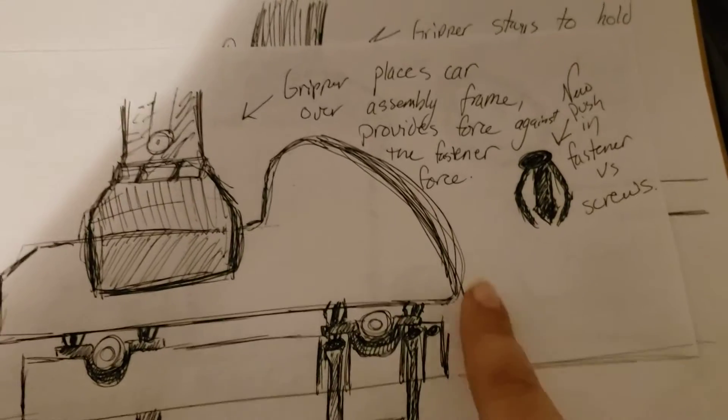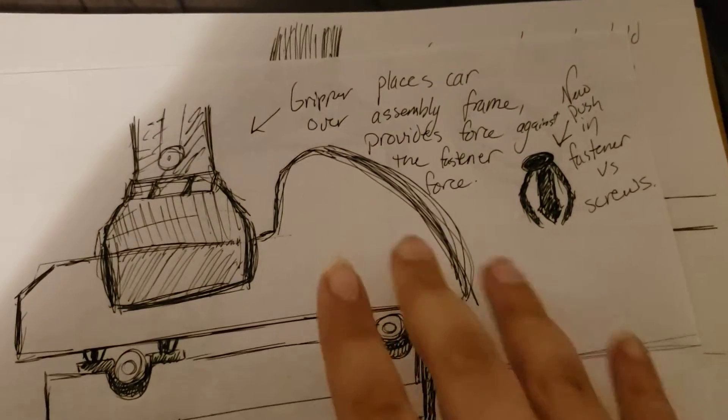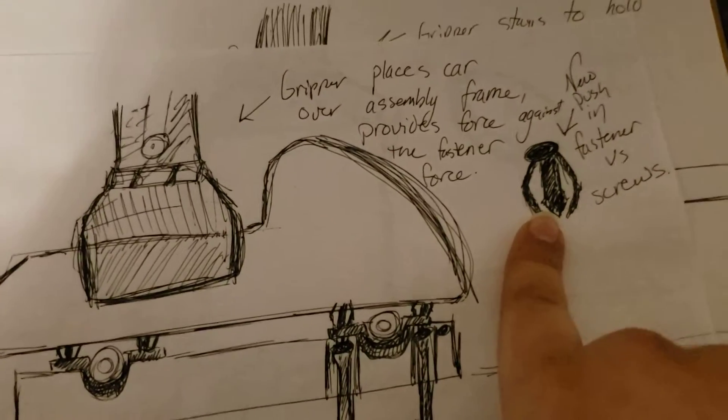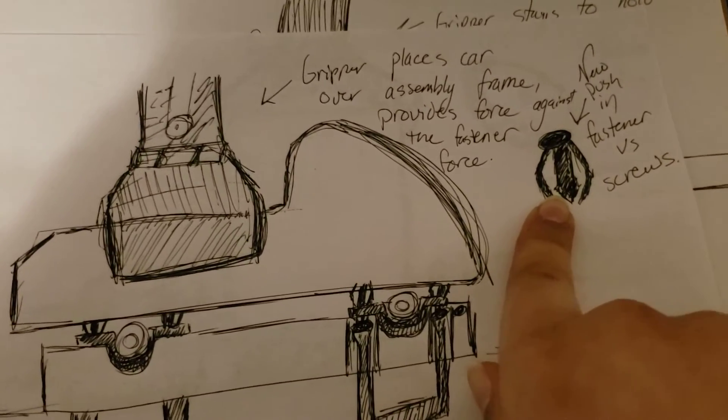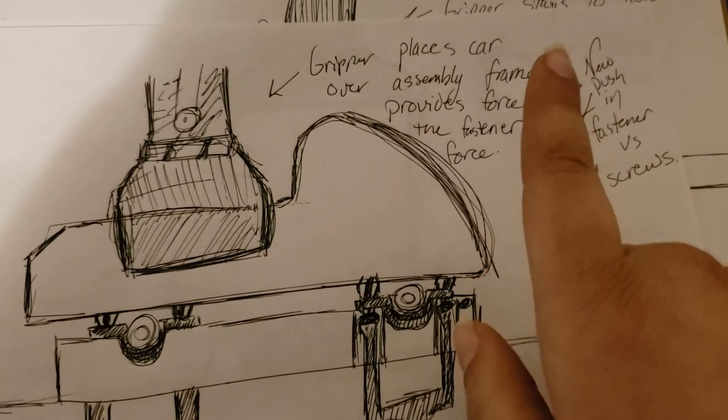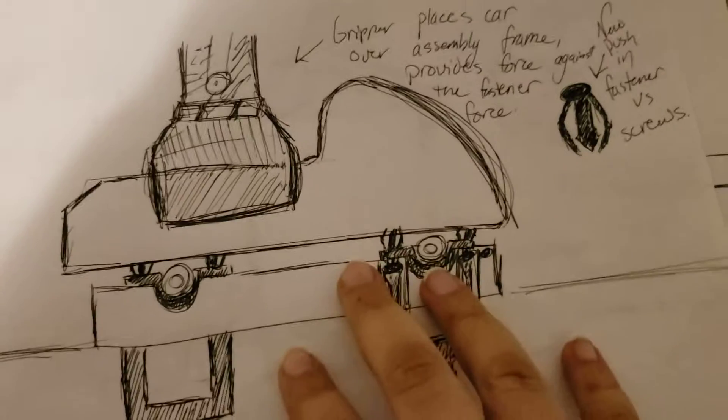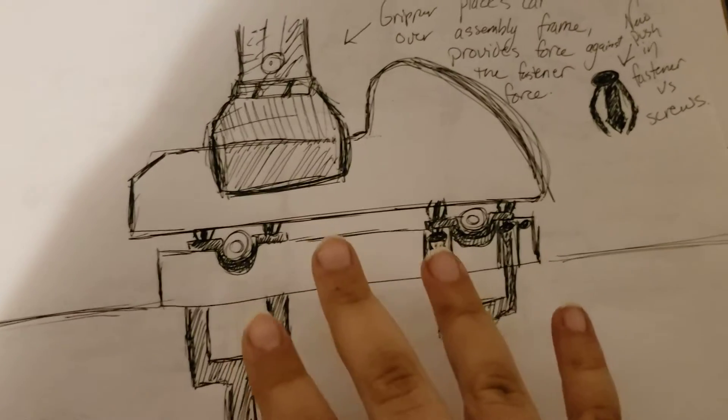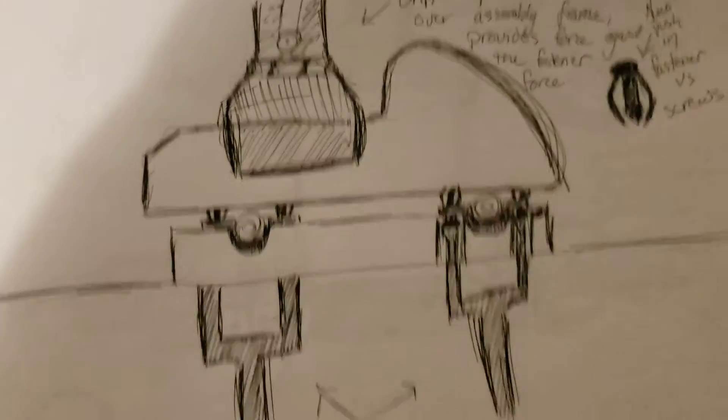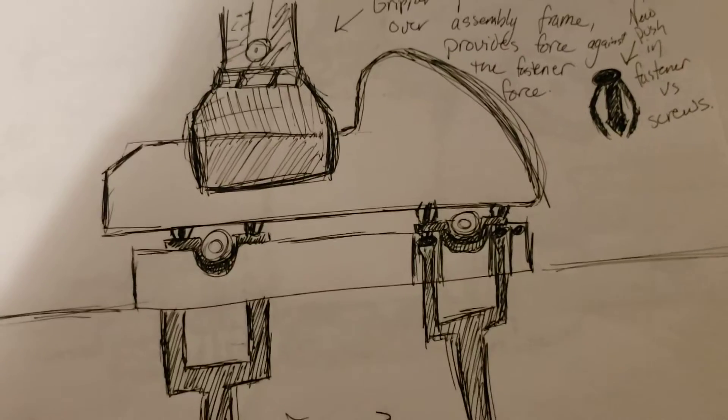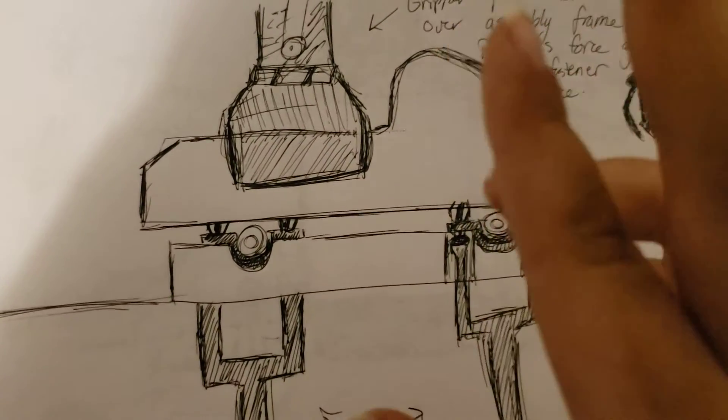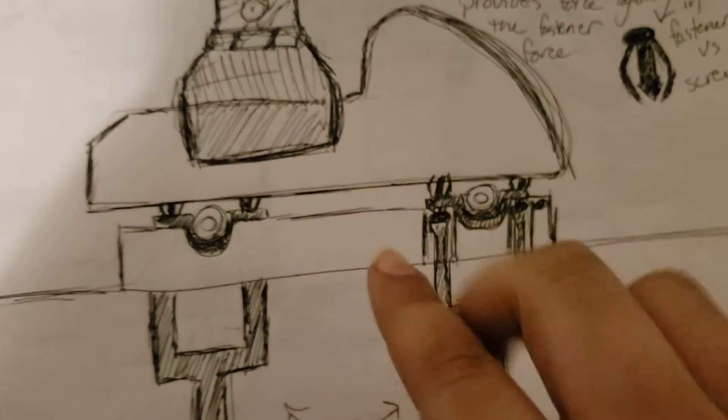Instead of wood screws, which are fairly difficult and time-consuming, there are these plastic fasteners, similar to normal automotive applications that could just be pressed in, and they would lock into place. That would be a good substitution, and better for automation, because all they would have to be is pushed into place and aligned instead of being screwed in.